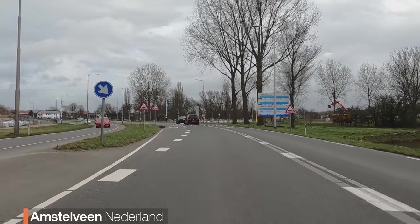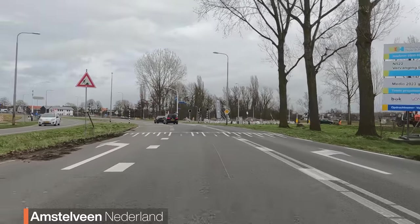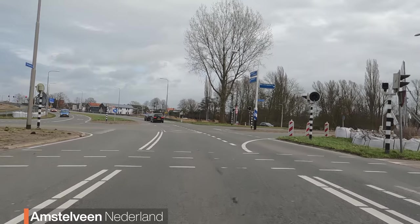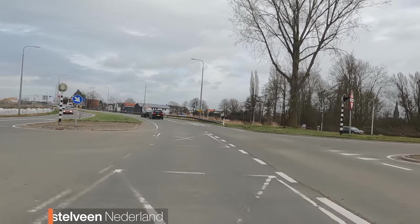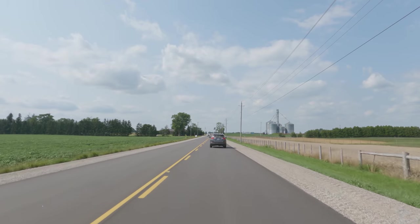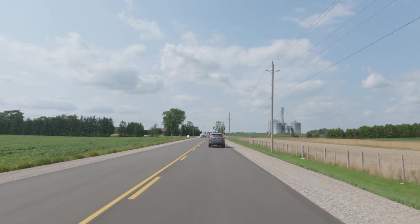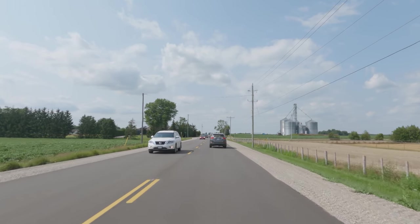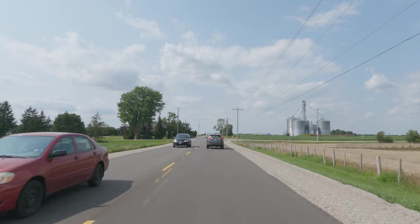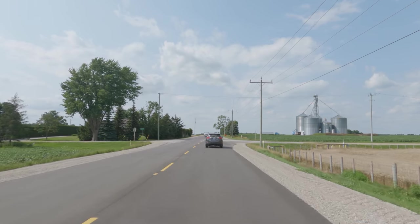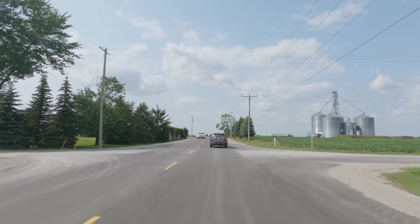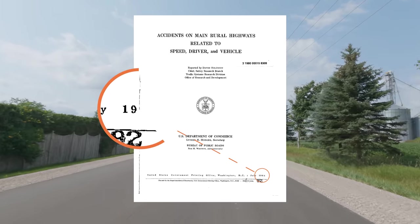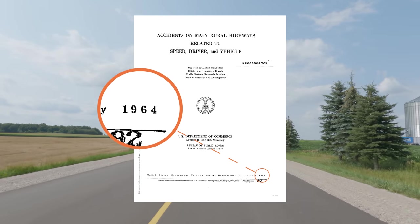The 85th percentile rule may be arbitrary, but it — or something like it — is not necessarily a bad way to set the speed limit of a road. One of the elements of safety on a rural road is that all drivers should be driving at around the same speed. When speeds are consistent, most drivers are traveling together, there is minimal overtaking, and therefore minimal opportunities for conflict. This is based on research of US rural roads in the 1960s.